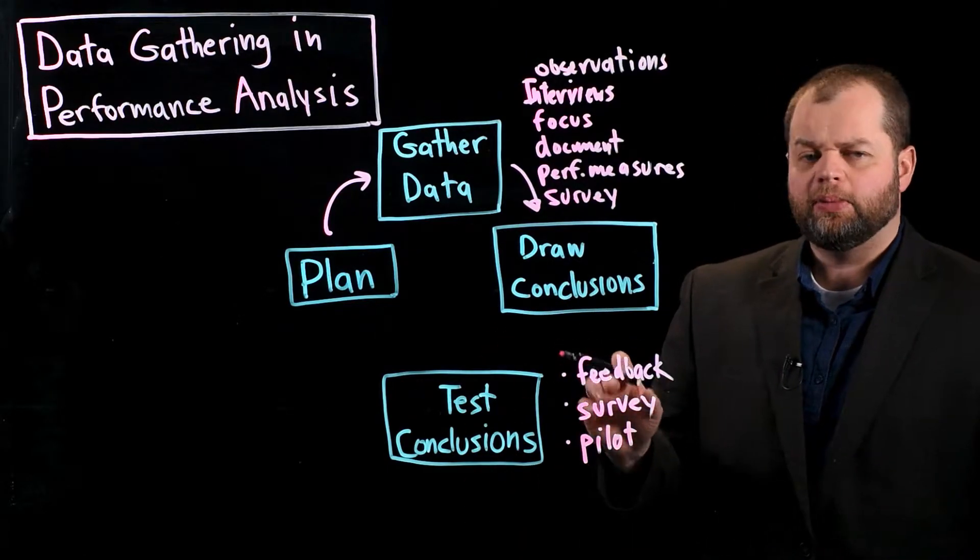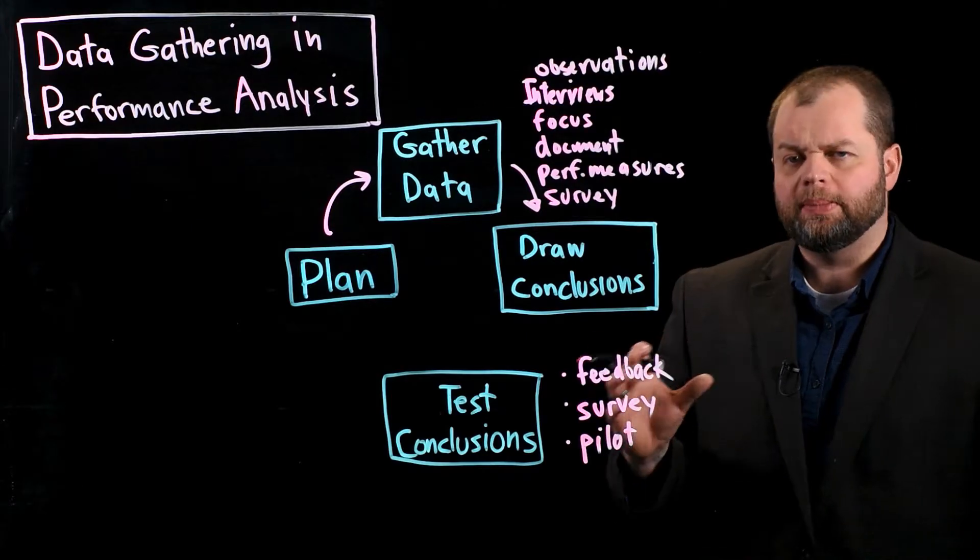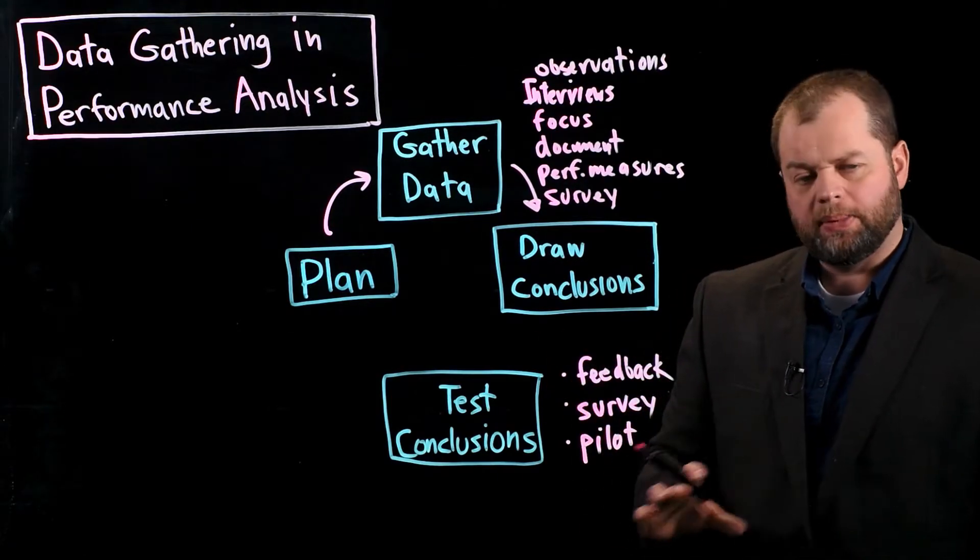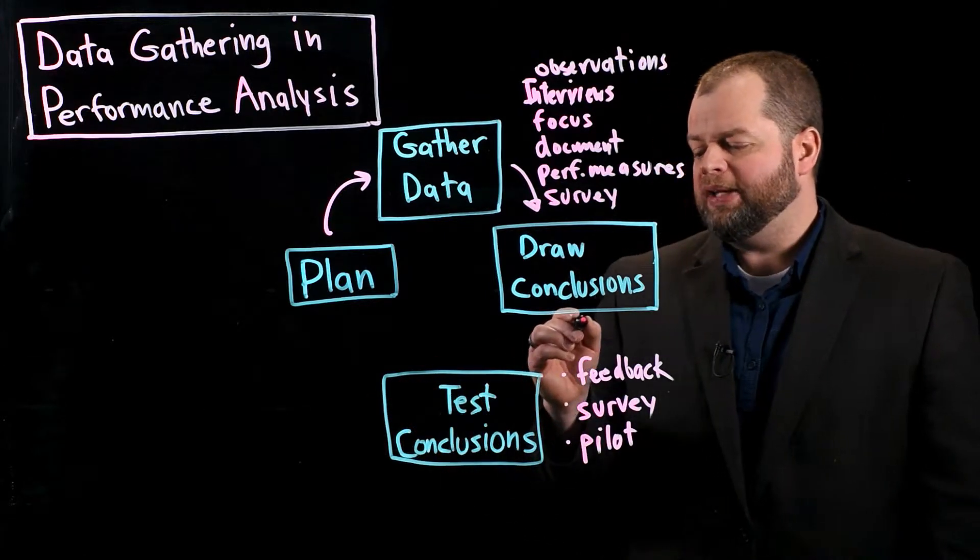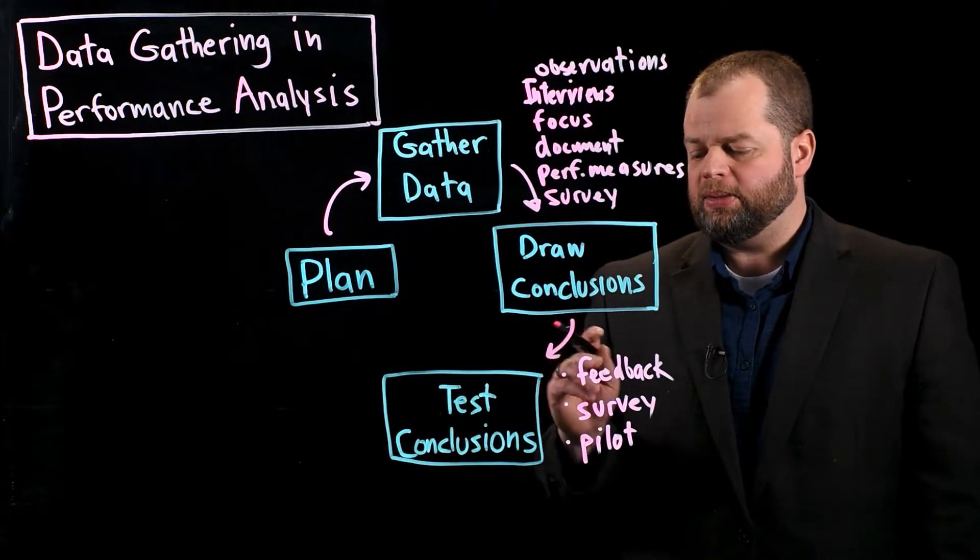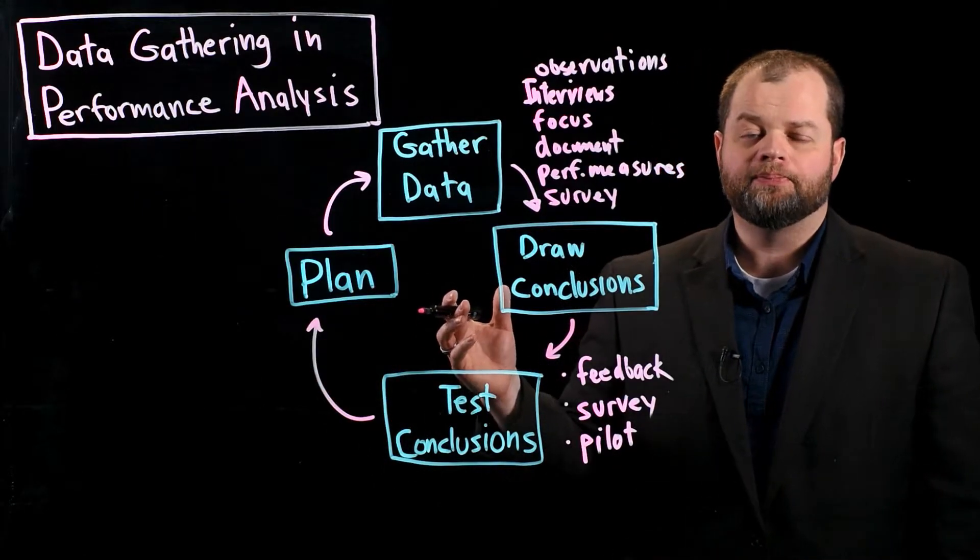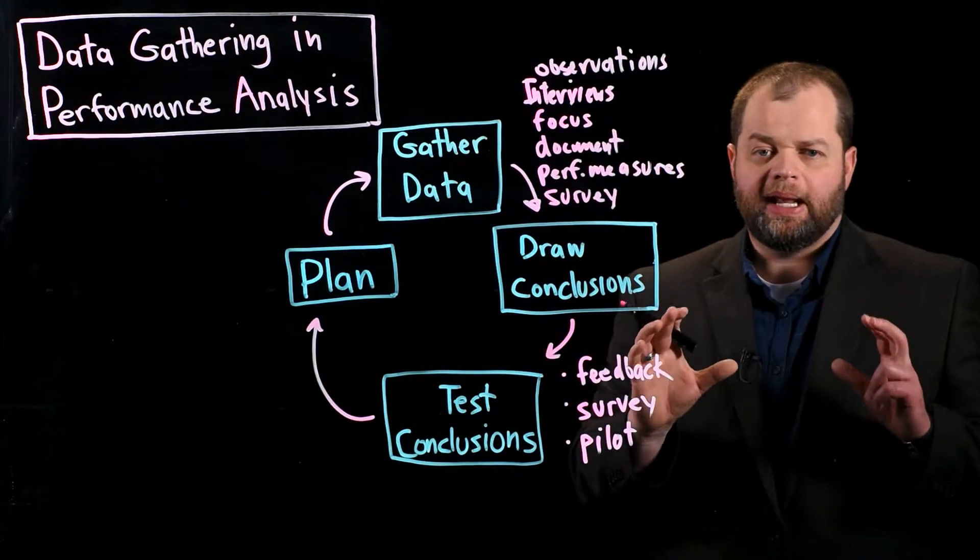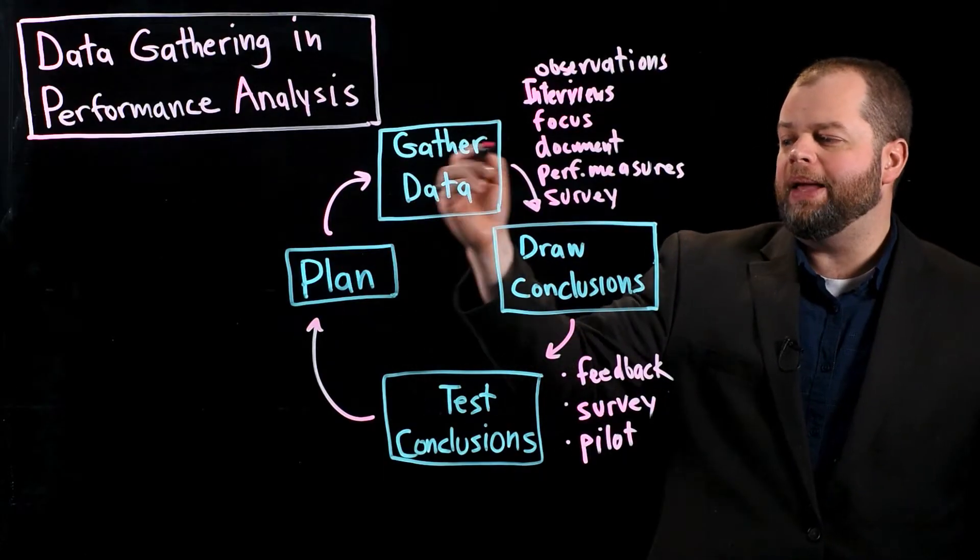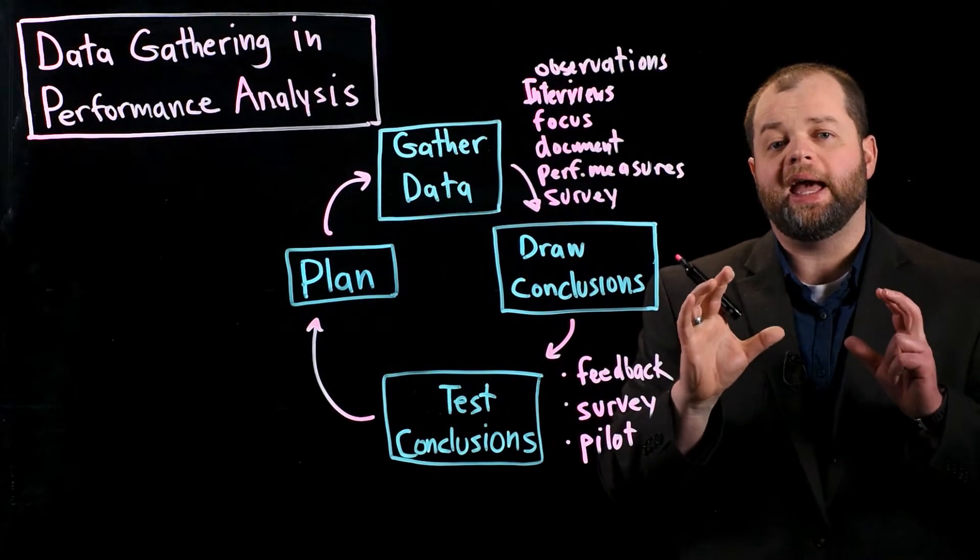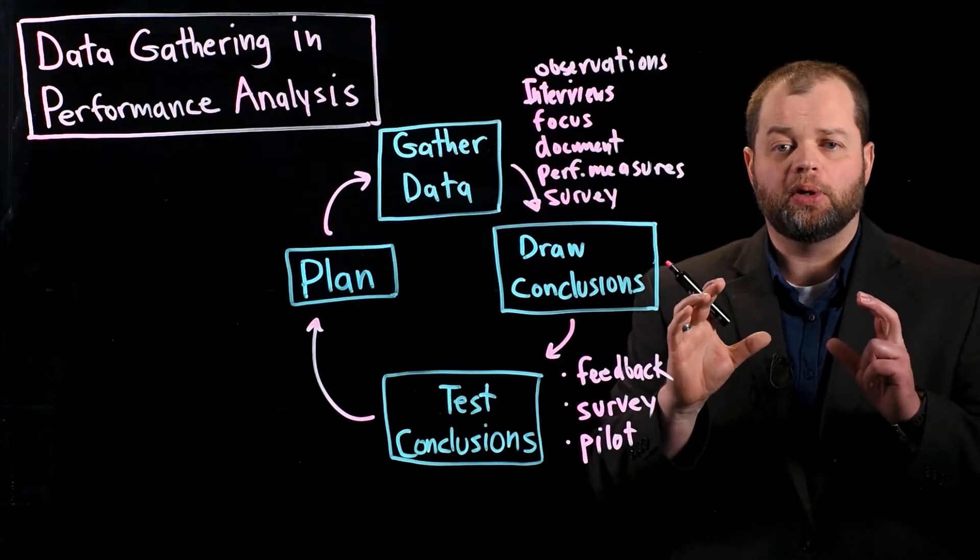And it may be that you kind of do these sequentially. You get feedback first, then you might go gather some more data, you survey, and then maybe you pilot something before you implement fully. So after you've tested those conclusions in these ways we've talked about, the next step is to plan again. What's my next step? Now, one thing that I will say is that typically you may go through this cycle a couple of times before you really have the solution that you think is going to work best.